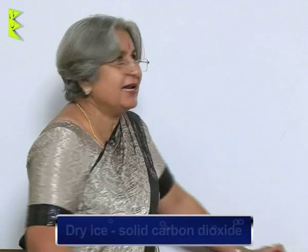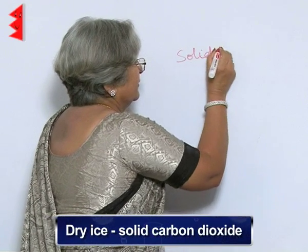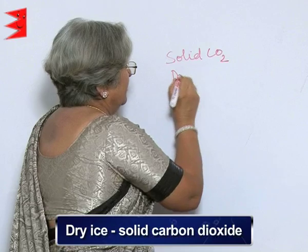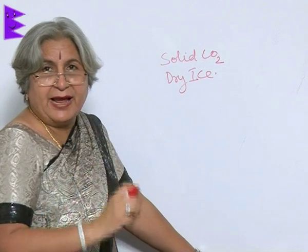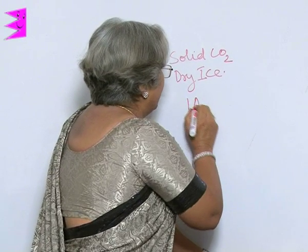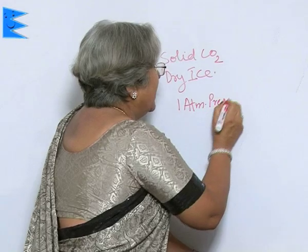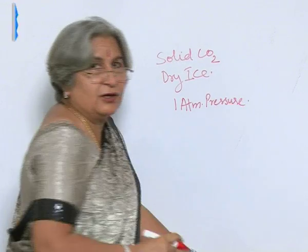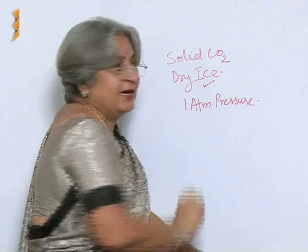Have you heard about dry ice? What is dry ice? Dry ice is nothing but solid carbon dioxide. When carbon dioxide is subjected under high pressure — that is one atmospheric pressure — and the temperature is lowered, carbon dioxide becomes solid, and that is what dry ice is.